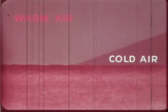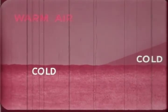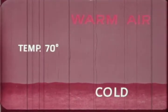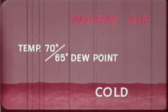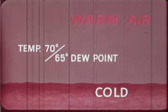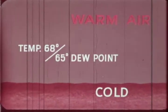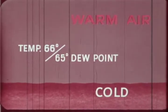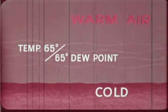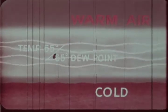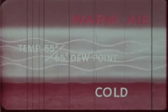Over land areas, warm air following the surface position of a warm front will be moving over terrain that has been cooled by the cold air preceding the front. Let us say that the temperature of the warm air is 70 degrees Fahrenheit and the dew point 65 degrees. As the warm air mass moves over the cold terrain, it is cooled. When the temperature of the warm air lowers to the dew point, condensation takes place. With gentle winds, widespread post-frontal fog develops; a stronger wind will cause low ceiling clouds to form.